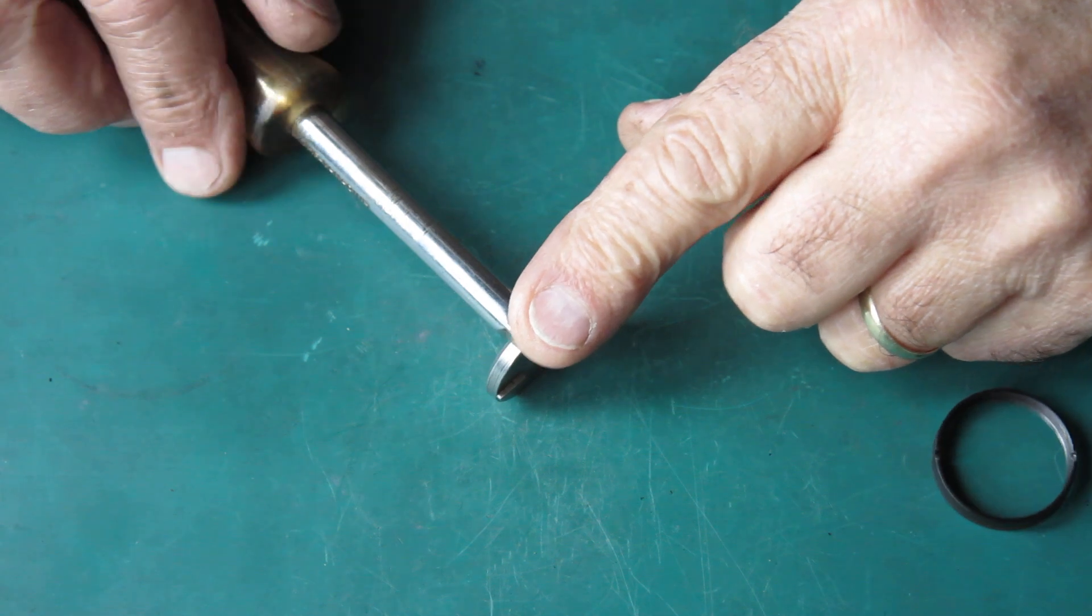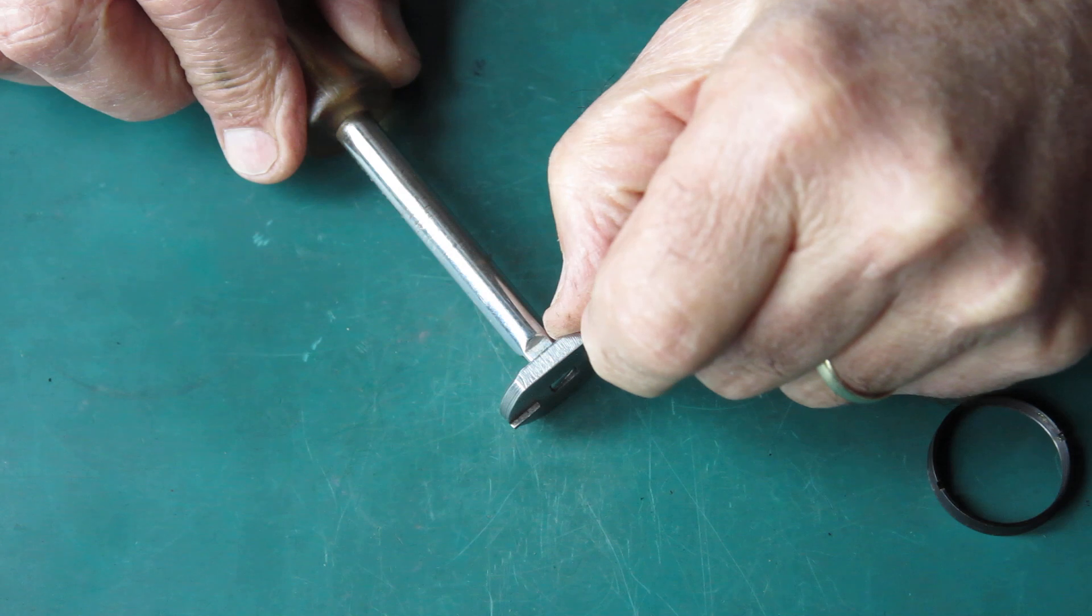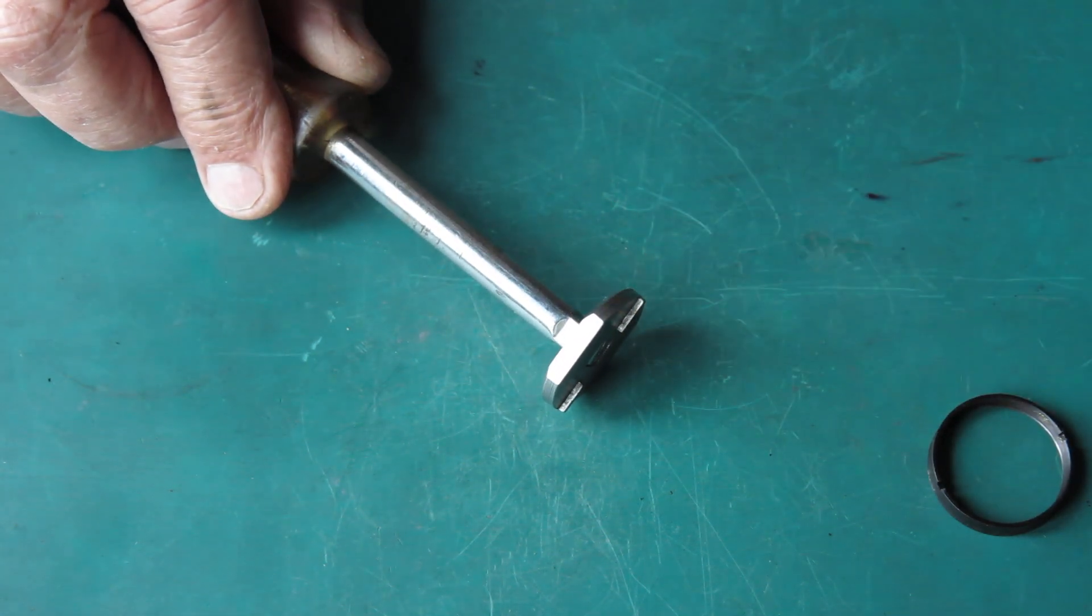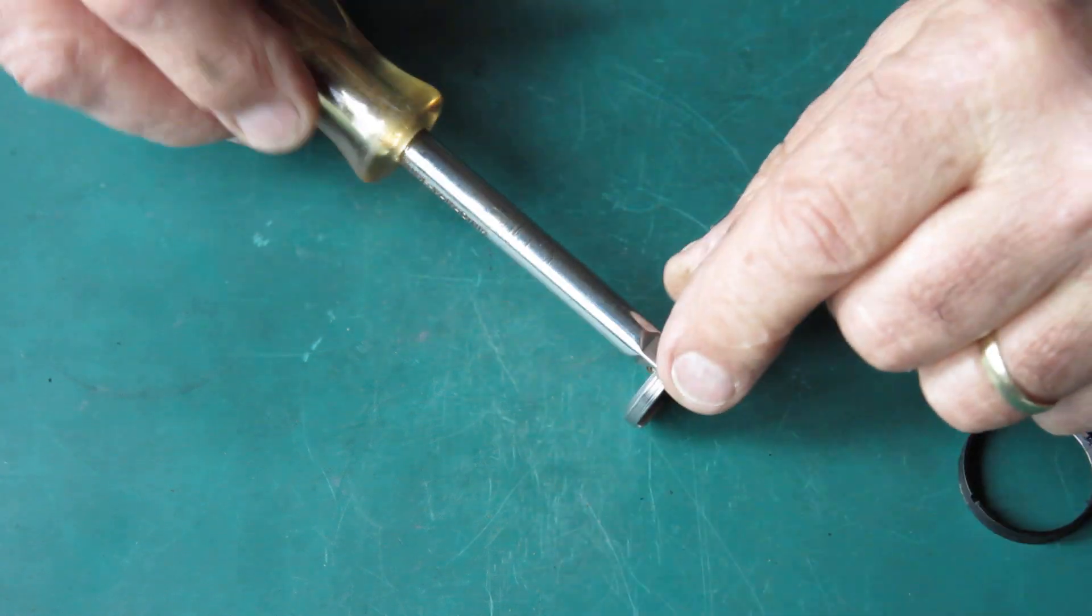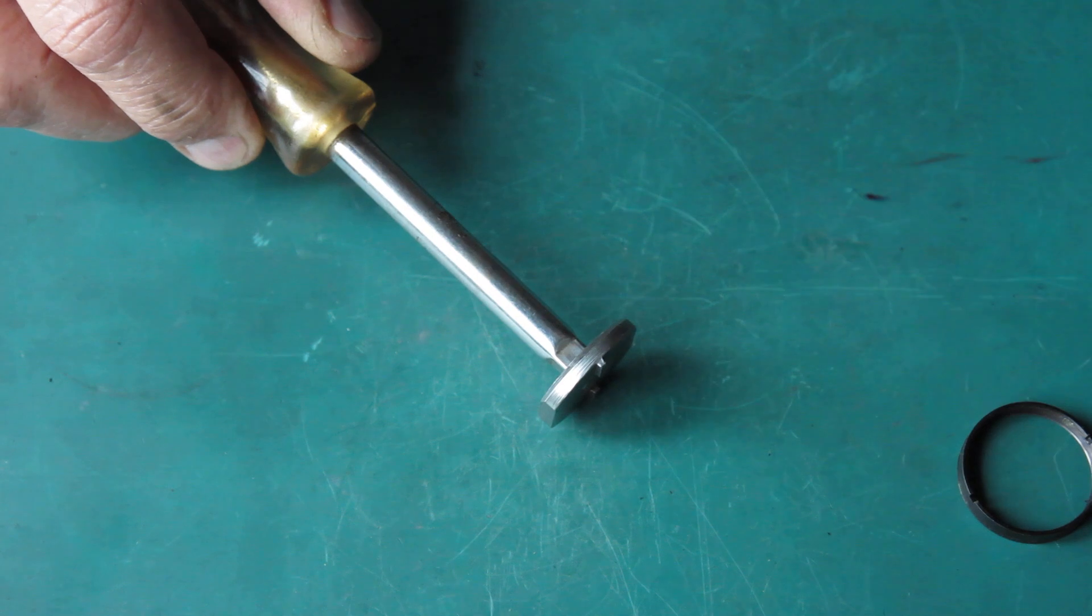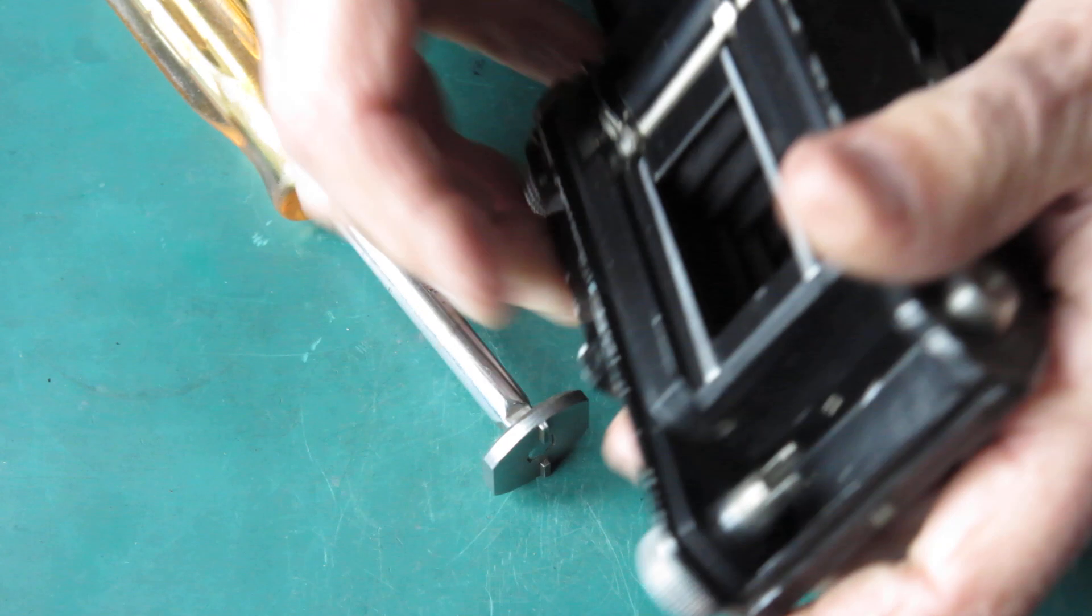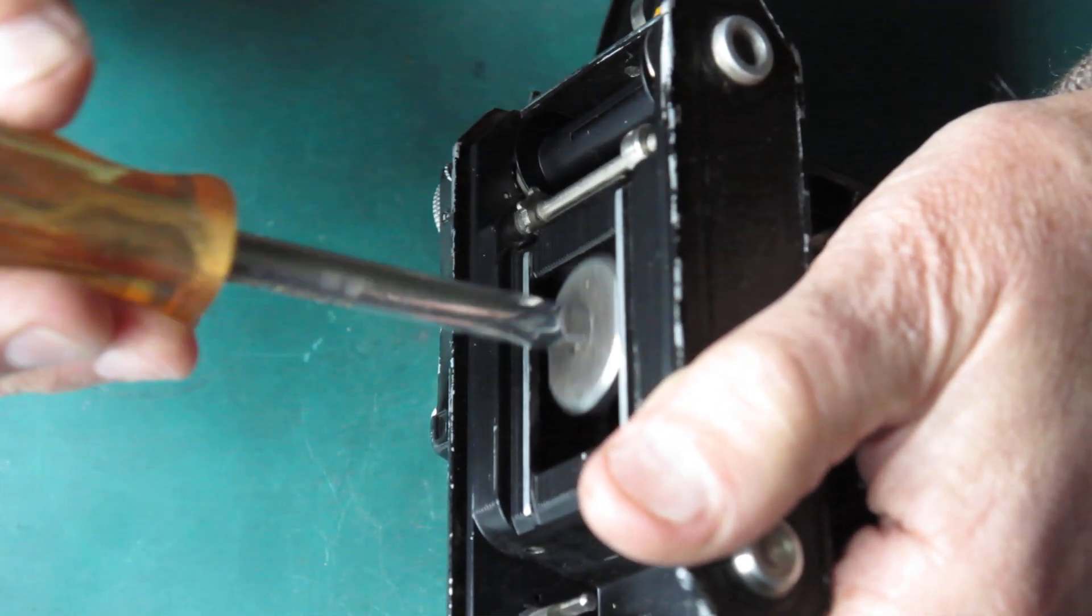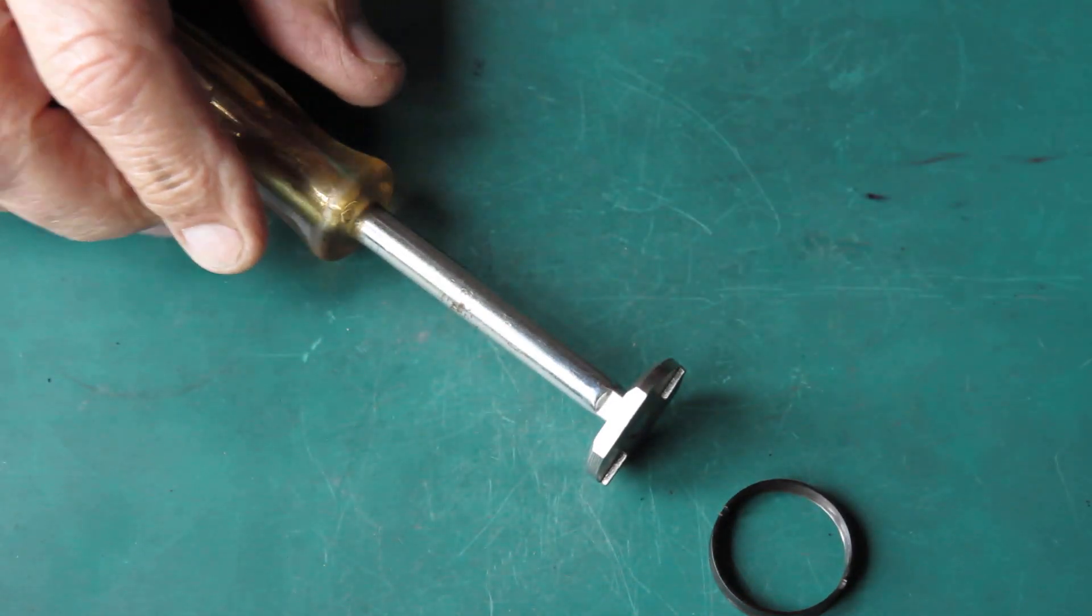So design considerations for a thing like this. Well, obviously it needs to be thick enough in cross section to have a bit of guts to it so that it doesn't just fold up. The width across the narrowed section here needs to be small enough that you can pop it into the back of the camera.